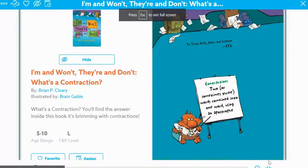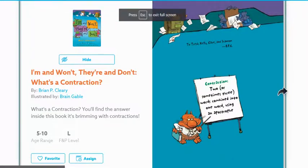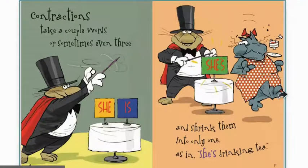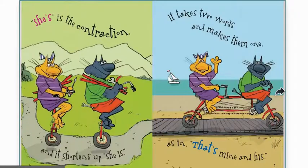Let's make this bigger. Contractions take a couple words, or sometimes even three, and shrink them into only one — as in 'she's drinking tea.' She's is the contraction and it shortens up 'she is.' It takes two words and makes them one, as in 'that's mine and his.'